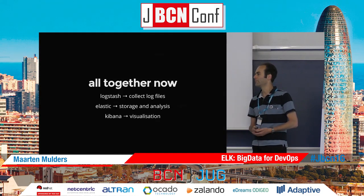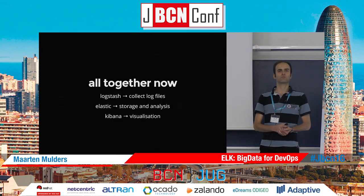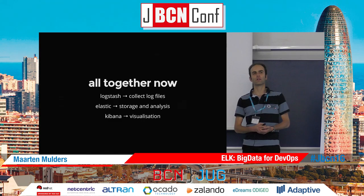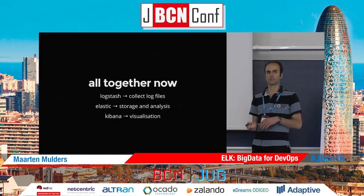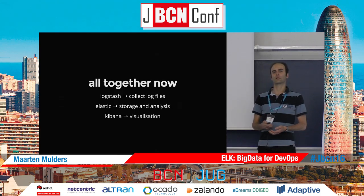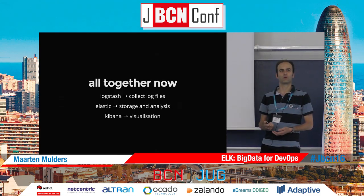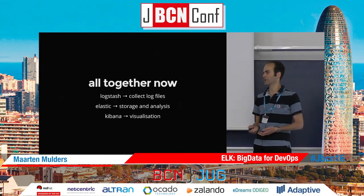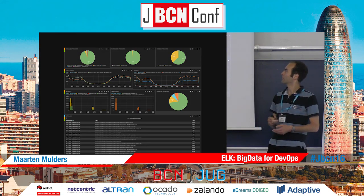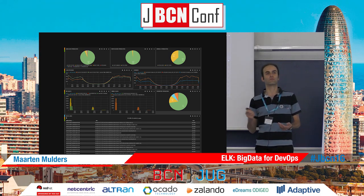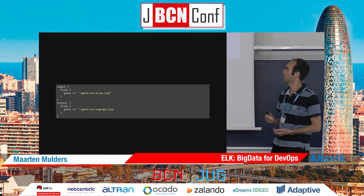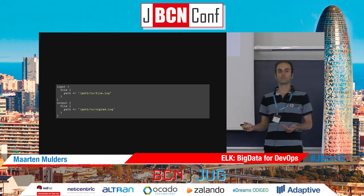If you put them together, you have Logstash which is used to collect logging data from your application, Elasticsearch - now called Elastic - which is used to store and analyze your logging information, and Kibana which we primarily use for visualization purposes. If you put them together it might look like this - which is pretty impressive, but it all starts with something pretty simple.